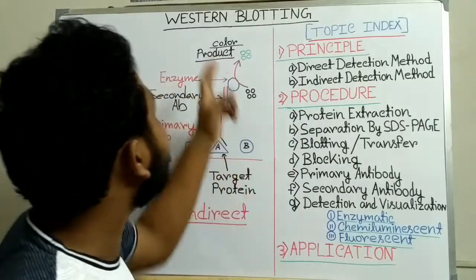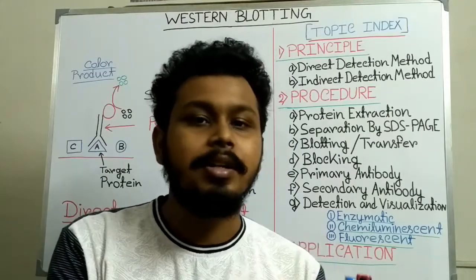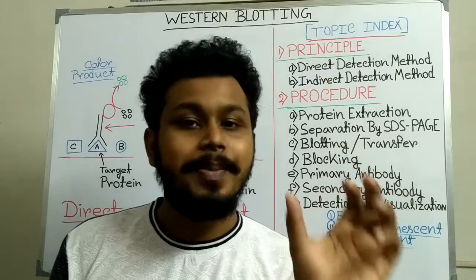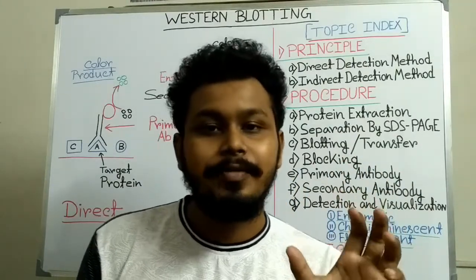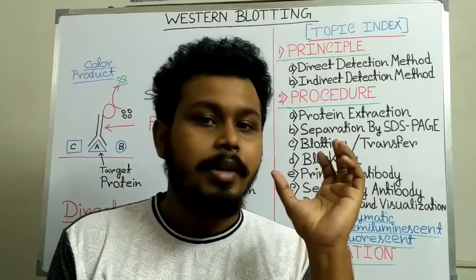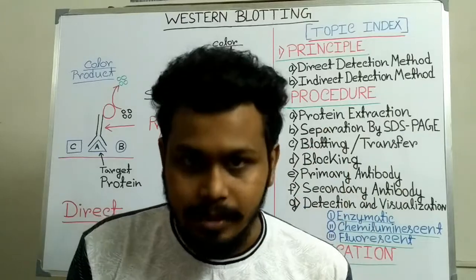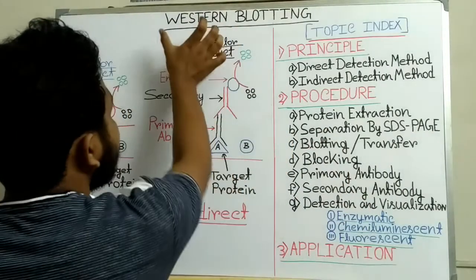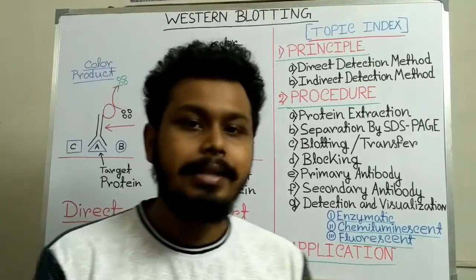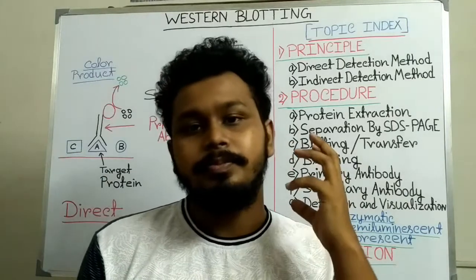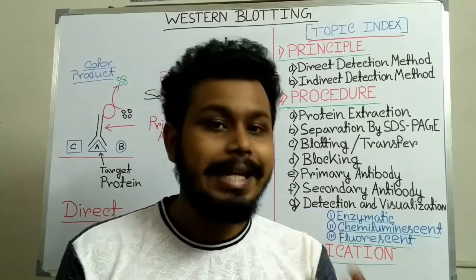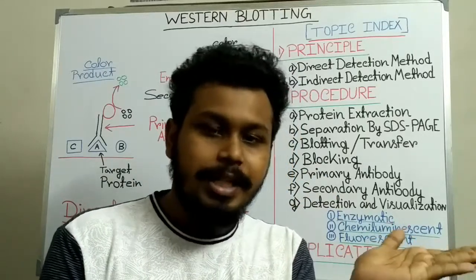Today I am going to discuss western blotting. Western blotting is principally similar to southern blotting and northern blotting. The main difference is: in southern blotting we identify a specific DNA molecule, in northern blotting we identify a specific RNA molecule, and in western blotting we identify a specific protein molecule from a mixture of proteins present in a tissue or cell. The term 'western' comes from southern blotting to show the similarity between them. Blotting is a process used to transfer a biological molecule — like DNA, RNA, or protein — from the gel to the membrane.